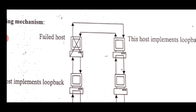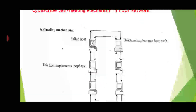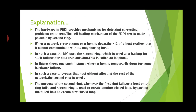In the figure, one such instance is shown where the host is temporarily down due to hardware failure. The failed host is bypassed and they get the looping back. In such cases, to bypass that host without affecting the rest of the network, the second ring is used. The purpose of the second ring is that whenever the first ring fails or a host on the ring fails, the second ring is used to create another closed loop, bypassing the failed host. This is the self-healing mechanism of the FDDI.